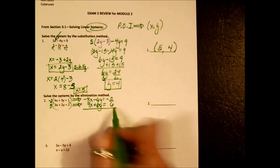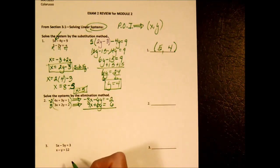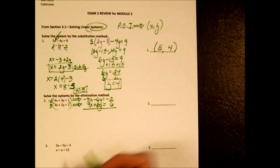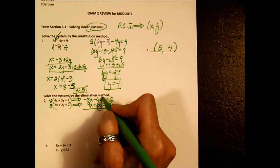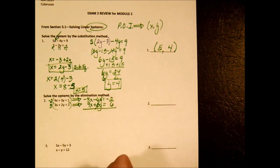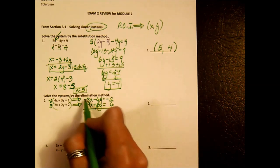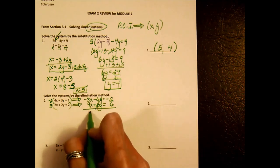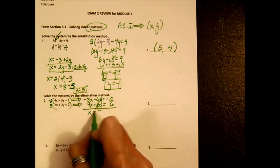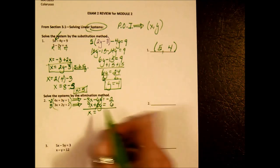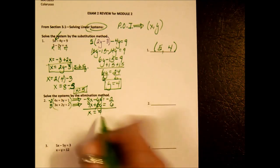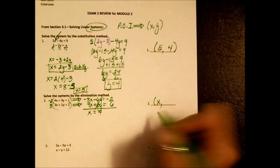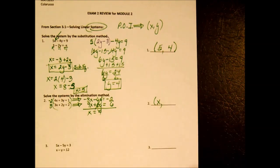Distribute the 3 here, and we get 9x plus 6y equals 6. In the elimination method, we add our two equations. These make a 0, so we accomplished getting rid of the y's. 9x minus 8x is 1x. Negative 2 and 6 is 4. So I just found the x part of my point of intersection.